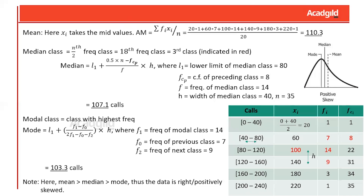The next example gives a deeper insight. For grouped data we do not know the exact value, so we calculate the mid value of each group. Xi takes these mid values, and the total mean is calculated as approximately 110. For median and mode we first locate the median class and modal class respectively. The required parameters are marked in red in the table. The median class falls at the n/2 frequency class, which is the third class.